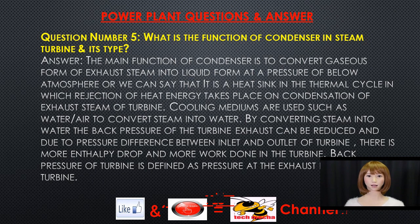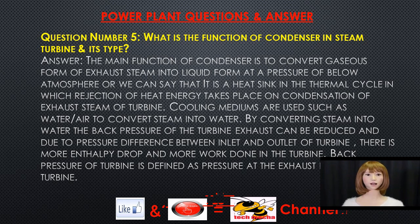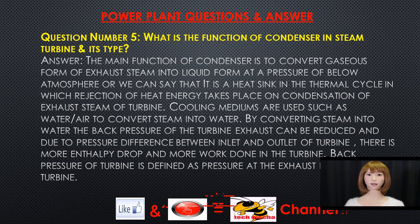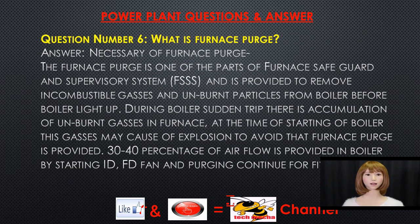Question number five: what is the function of a condenser in a steam turbine and its types? The main function of a condenser is to convert the exhaust steam from gaseous form into liquid form at a pressure below atmosphere. It acts as a heat sink in the thermal cycle where heat energy is rejected on condensation of exhaust steam. Cooling mediums such as water and air are used to convert steam into water, reducing the back pressure at the turbine exhaust. This pressure difference between turbine inlet and outlet increases enthalpy drop and work output. Back pressure is defined as the pressure at the exhaust nozzle of the turbine.